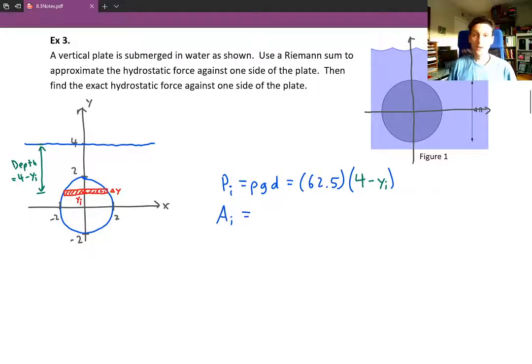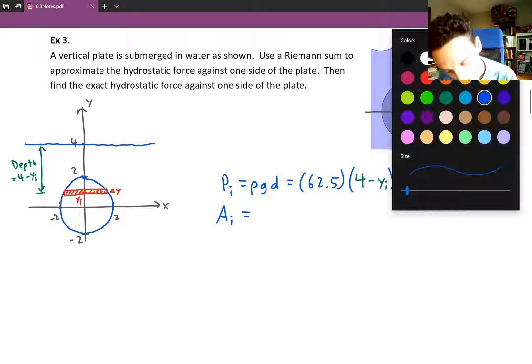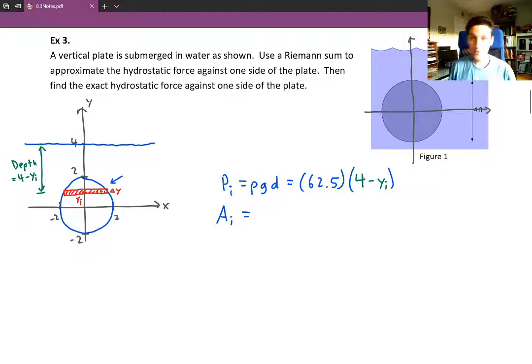Then we have the area of that strip. Now here it's a little bit more complicated than the swimming pool example. Because here the length of that strip is changing as you go up and down. Near the bottom it's smaller. Near the middle it's bigger. And then it gets smaller as you go to the top of the circle. So what we've got to do is come up with a formula that gives us the length of each of those strips. The width is always delta y. But the length is always going to be changing.